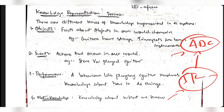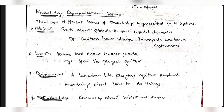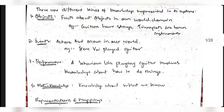So the four things in knowledge representation are: objects which are entities, events which are things happening, performance which is the action happening, and meta-knowledge which is knowledge about what you know. These are the first four things you need to know.